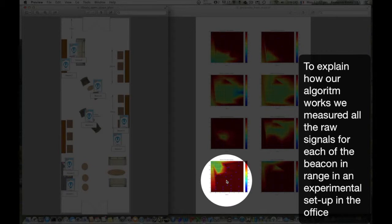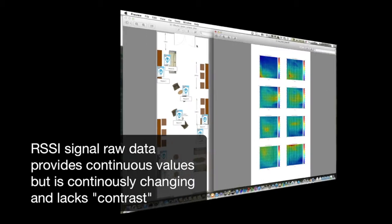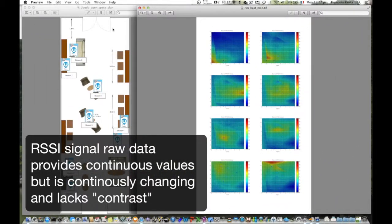The RSSI is more continuous data but it's completely changing and it lacks contrast. Even the distance is difficult to estimate with RSSI because of these fluctuating values.